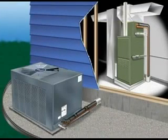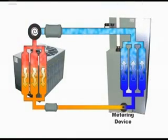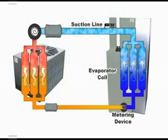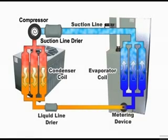This is an illustration of a typical air conditioner refrigeration system. The components that make up the system include a metering device, evaporator coil, suction line, suction line dryer, compressor, condenser coil, liquid line dryer, and liquid line.